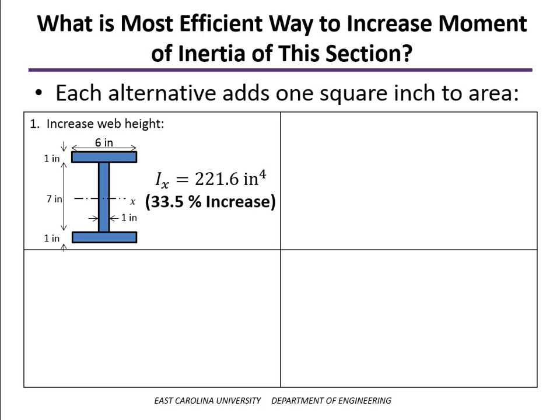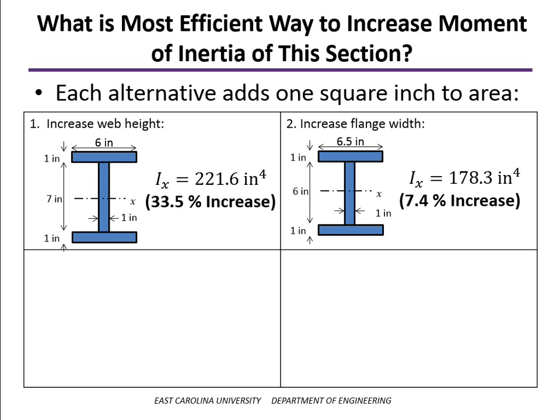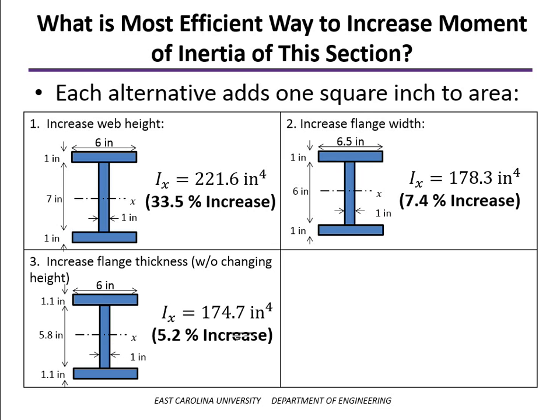A lot of times you can't do that because you might be restricted on how tall this beam can be. Another way would be to increase the flange width without increasing the overall height. If you do that, the increase is much less, about 7.4%. You could also increase the flange thickness. But if you have to do that without changing the overall height of the beam, you'll find the increase is only about 5.2%, really on the same order that you're increasing the area by.